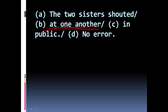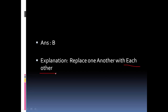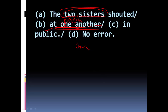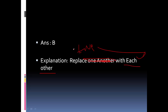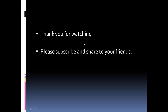We use 'each other,' not 'one another,' because they mentioned two sisters. For two people, we use 'each other'; for more than two, we use 'one another.' So the correct sentence is: 'The two sisters shouted at each other in public.' Option B is the correct answer. Thank you for watching — please subscribe to this channel and share with your friends.